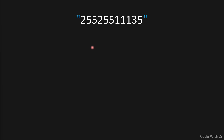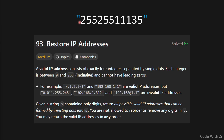Hi, welcome to Code with Z. In today's video we need to extract IPs out of a string. LeetCode 93, Restore IP Addresses, says a valid IP address consists of exactly four integers separated by single dots. Each integer is between 0 and 255 inclusive and cannot have leading zeros. Let's see what the question is actually asking us to do.